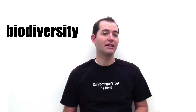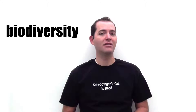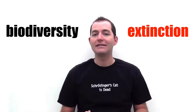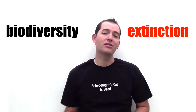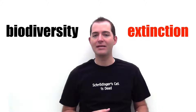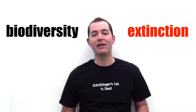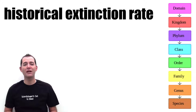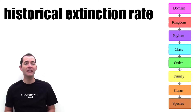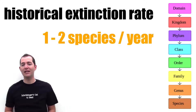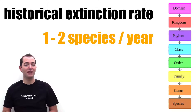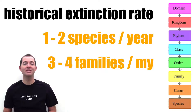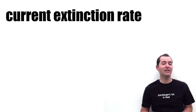In a general sense, the greatest threat to biodiversity is extinction. Extinction is a natural event and geologically has been happening for a very long time. The historical extinction rate over the last 200 million years is estimated at one to two species per year and three to four families per million years.